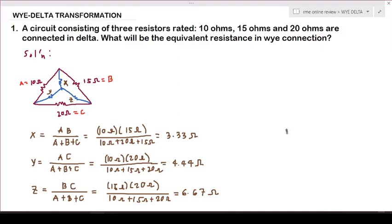If we draw our wye connection, it will look like this: X is 3.33 ohms, Y is 4.44 ohms, and Z is 6.67 ohms. That is the answer. We will be solving another problem in the next video. Thank you for watching, I hope you learned something, and as always, to pass the exam, keep on studying.